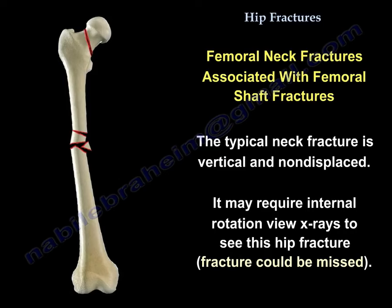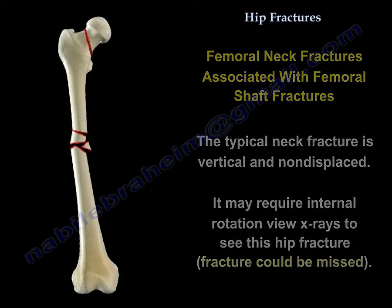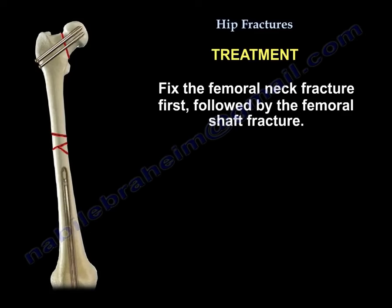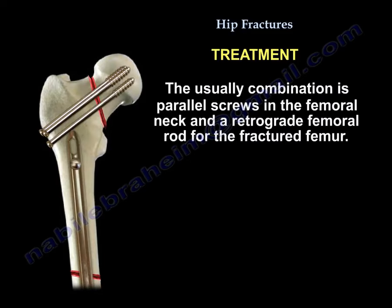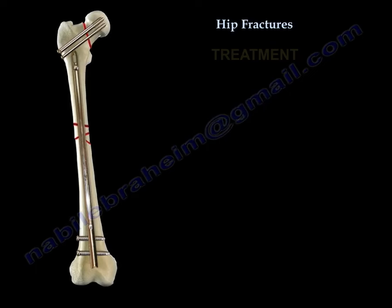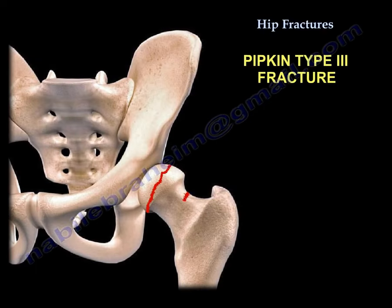Another area of interest is femoral neck fractures associated with femoral shaft fractures. The typical neck fracture is vertical and non-displaced, and may require internal rotation view X-rays to identify it — this fracture can be missed. Treatment is to fix the femoral neck fracture first, followed by the femoral shaft fracture. The usual combination is parallel screws in the neck and a retrograde femoral rod for the femoral shaft.